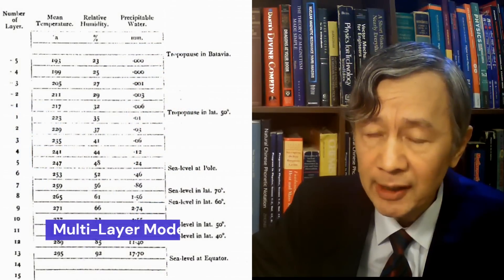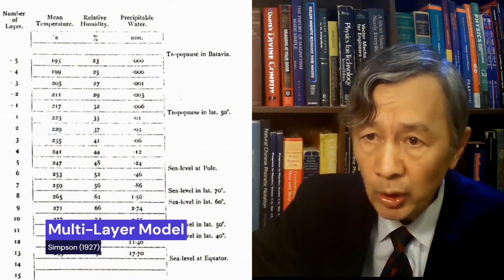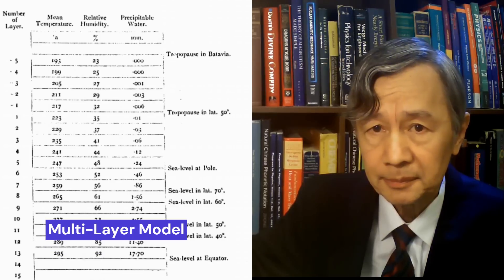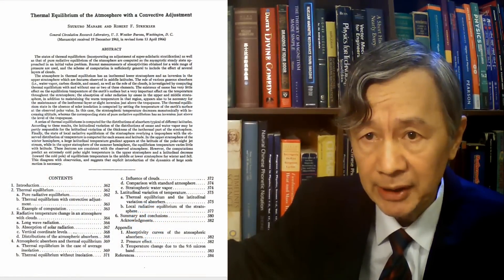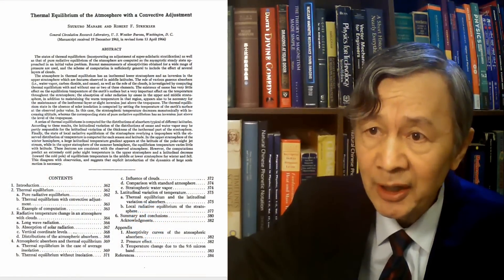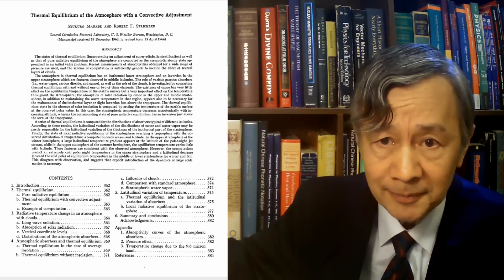In fact, as one viewer drew my attention, Sir George Clark Simpson, an earlier meteorologist, had introduced a multi-layer atmospheric model as early as 1927, focusing on water vapor radiation. Still, Manabe was the first to claim that convection could be incorporated into his radiative transfer calculation, while Arrhenius only considered radiative equilibrium. Again, you may wonder: how did he do that?